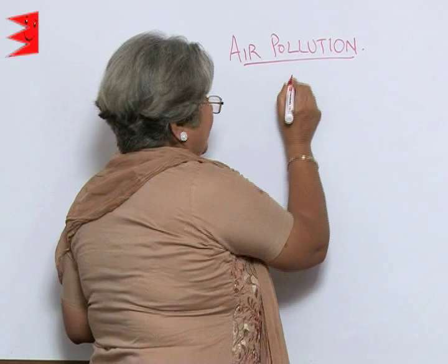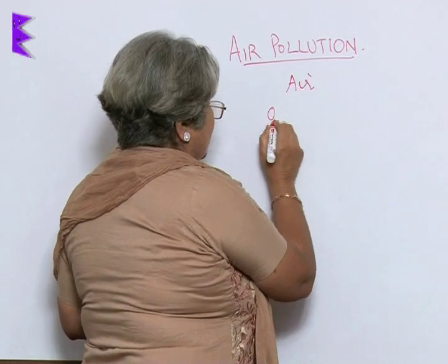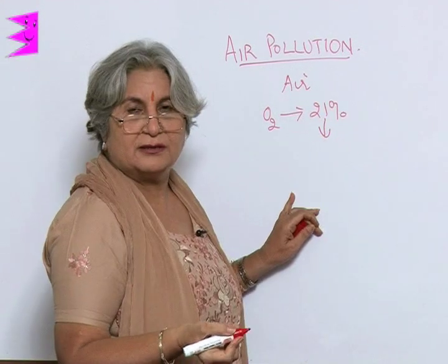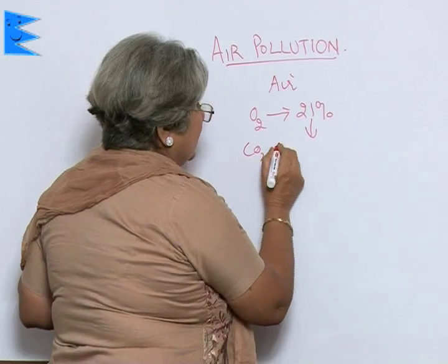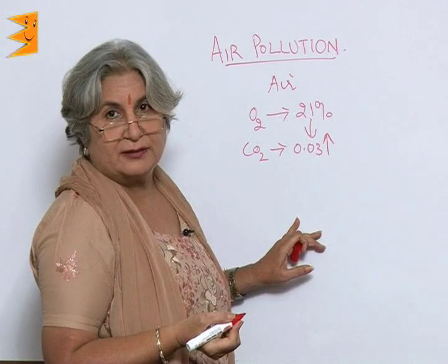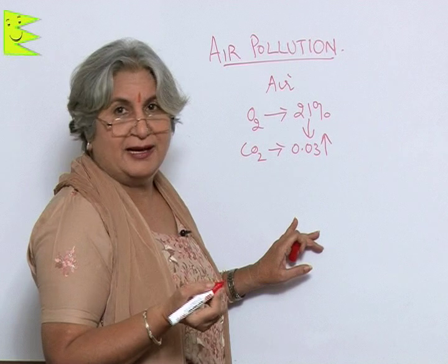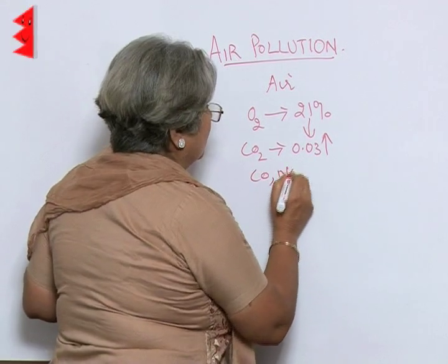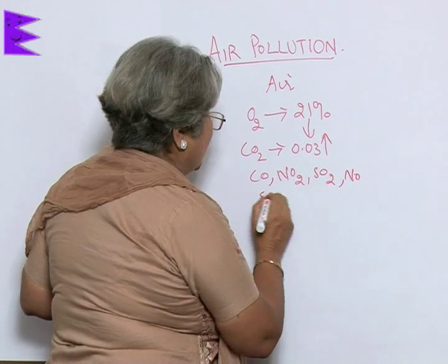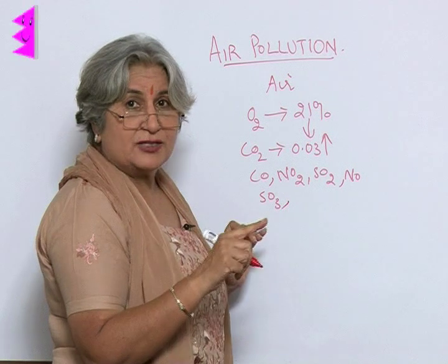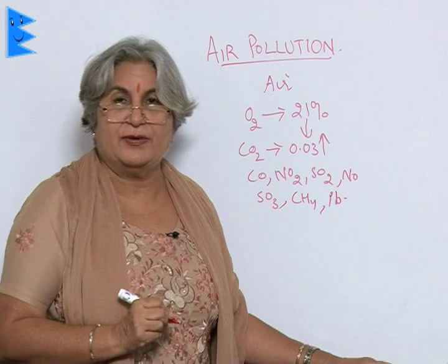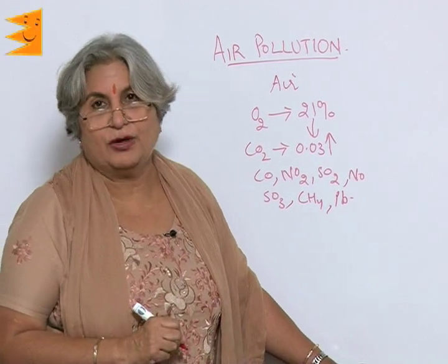For example, in air, if oxygen reduces from 21%, air is polluted. If carbon dioxide increases from 0.03%, air is polluted. If there are acidic oxides in air like CO, NO2, SO2, NO, SO3, and also other harmful components like methane and lead, we say that air is polluted.